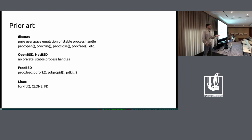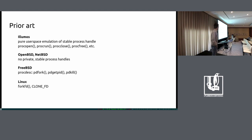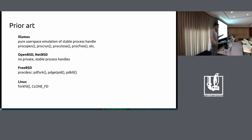FreeBSD has it - I think this derives from the Capsicum project. They call it proc_desc - a process file descriptor. They have three syscalls: PDFORK, PDGETPID, and PDKILL. On Linux, we sort of have two of those - PDFORK and PDKILL - but the semantics differ in a bunch of aspects. The concept is at least similar, though the semantics are sometimes different.